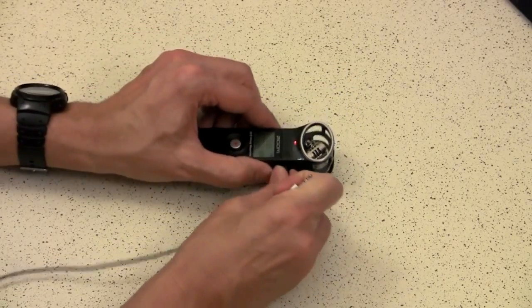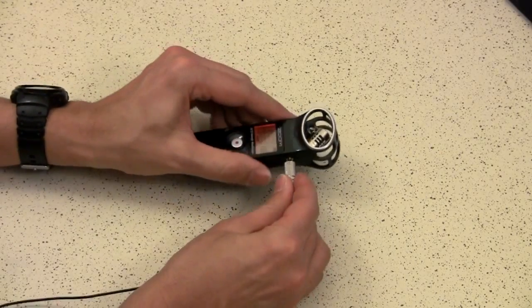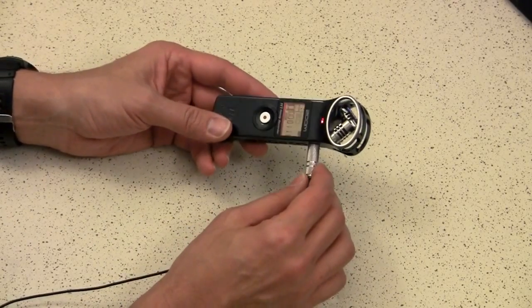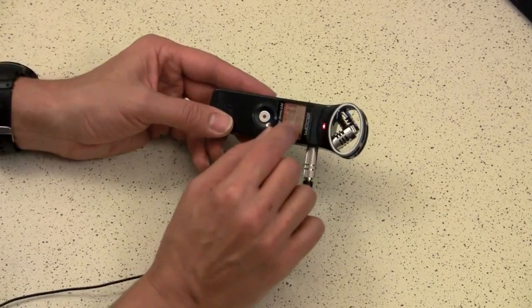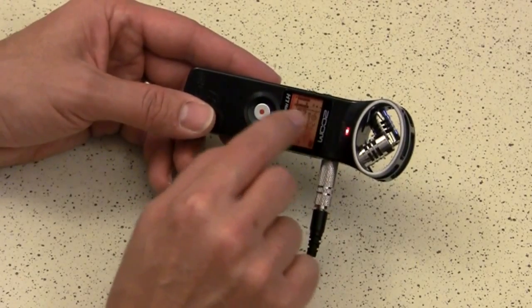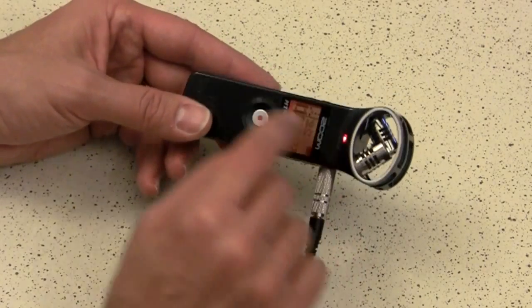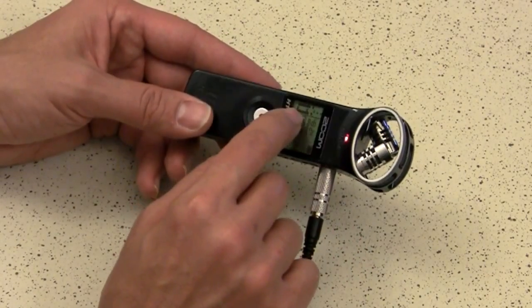You just unplug your mic, plug it into the adapter and then into your audio recorder. And now you can see that both left and right channel are the same thing because this adapter has duplicated this mono signal and put it into both left and right channels.